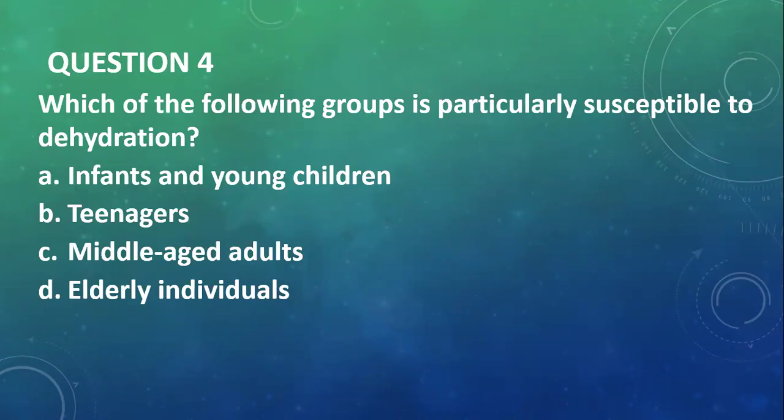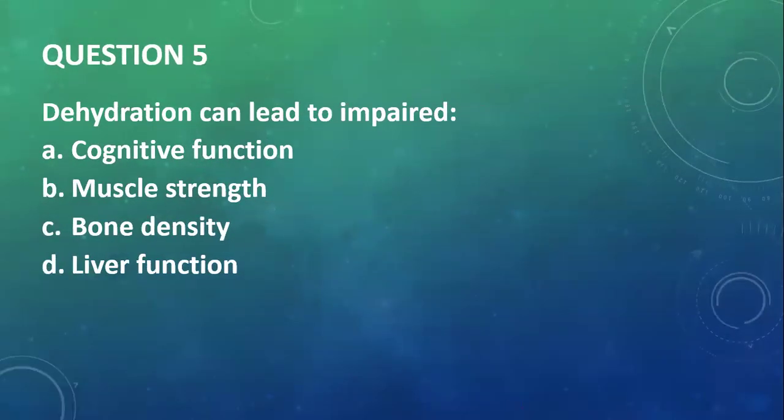Question 4: Which of the following groups is particularly susceptible to dehydration? You have infants and young children, teenagers, middle-aged adults, and elderly. The most prone group would be the infants and young children due to their inability to get to water when they need it—they depend on caretakers.